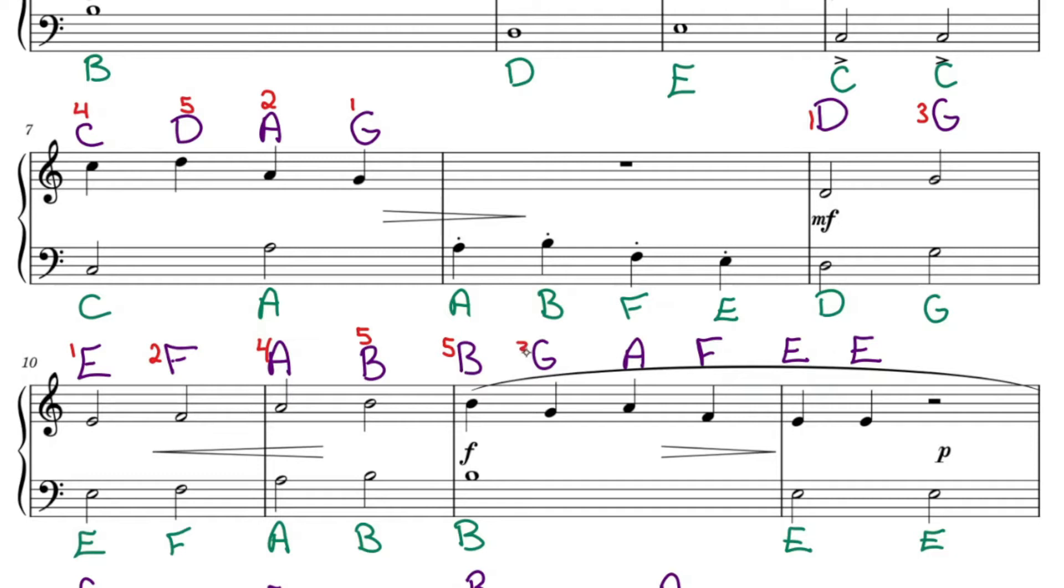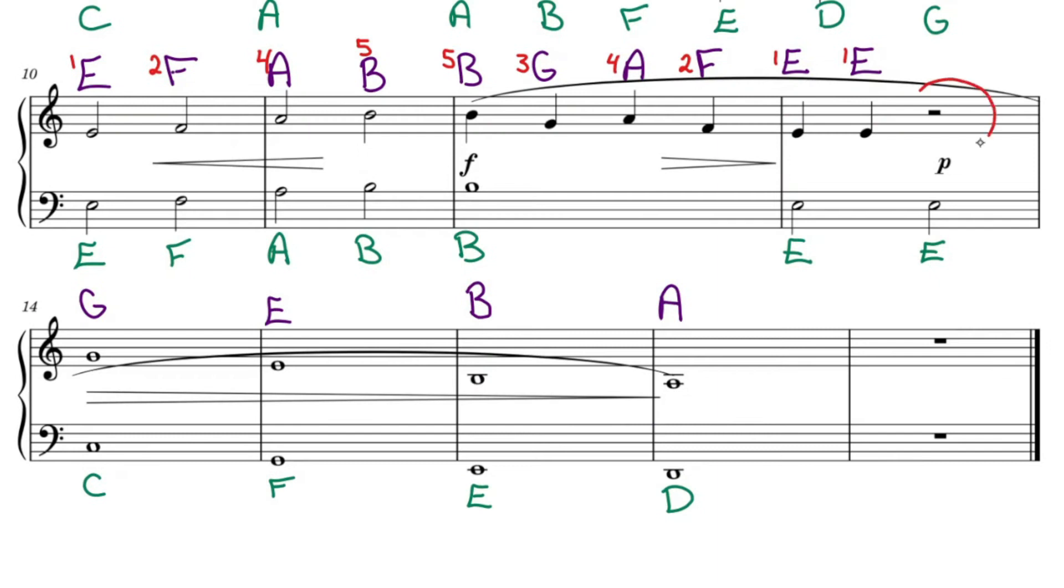Finding that once again our thumb is D, our lowest note, and our pinky number 5 is on our highest note B. Let's place our middle finger on our G, as our thumb will be moving to the E. Finger number 2 up next. Finger number 3 was on our G. Finger number 4 on the A.